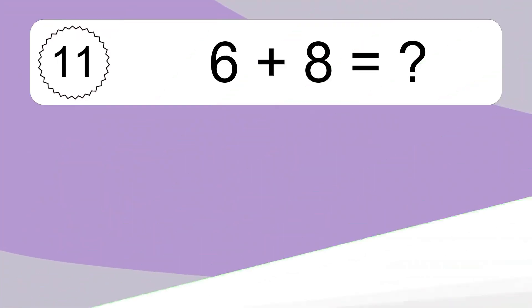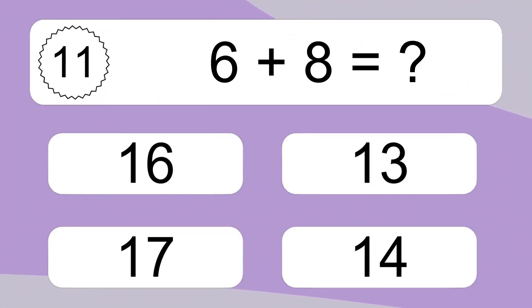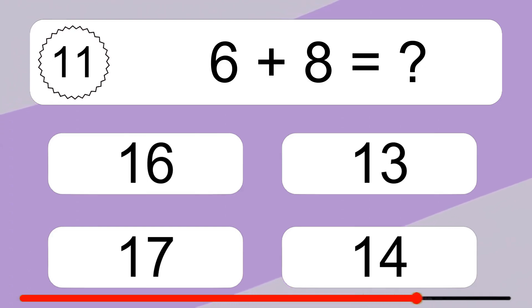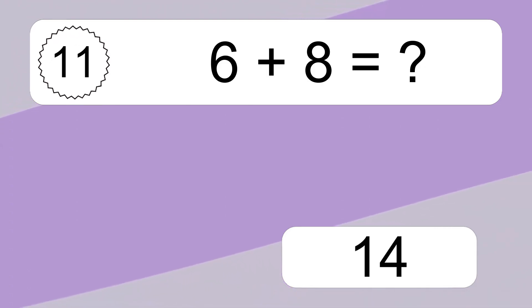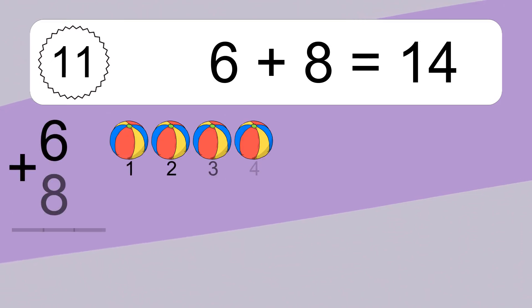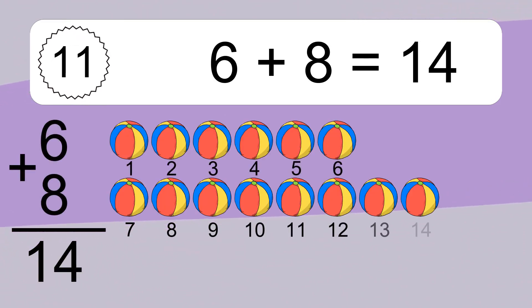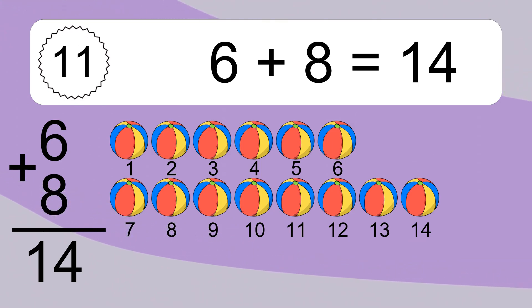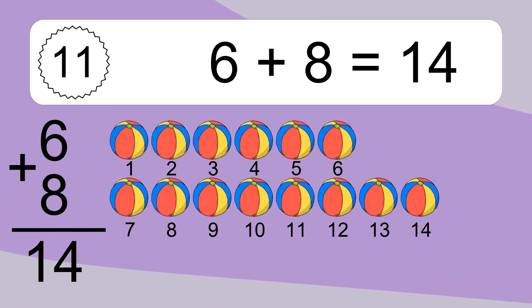6 plus 8 equals what? 6 plus 8 equals 14. Let's count it. 1, 2, 3, 4, 5, 6, 7, 8, 9, 10, 11, 12, 13, 14.